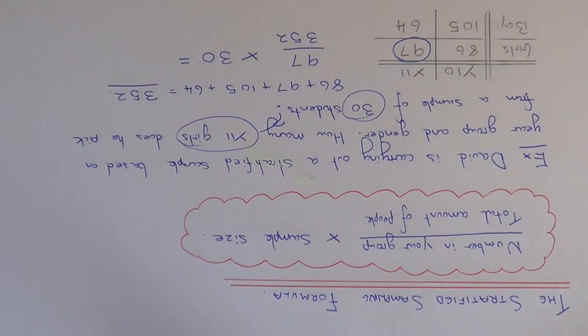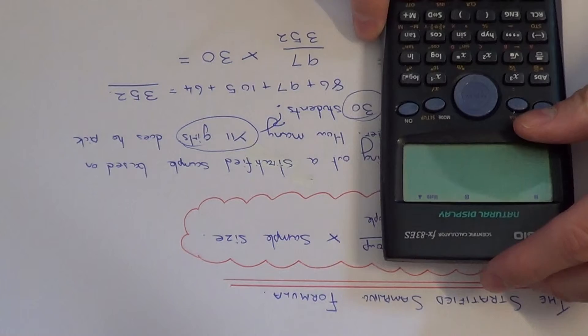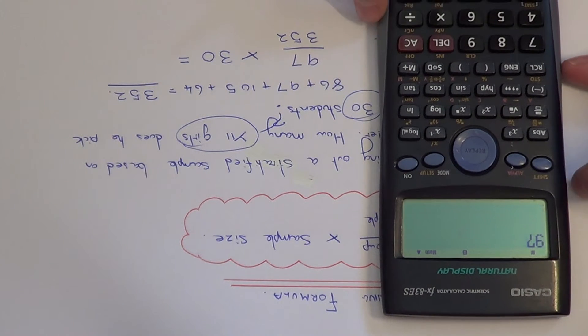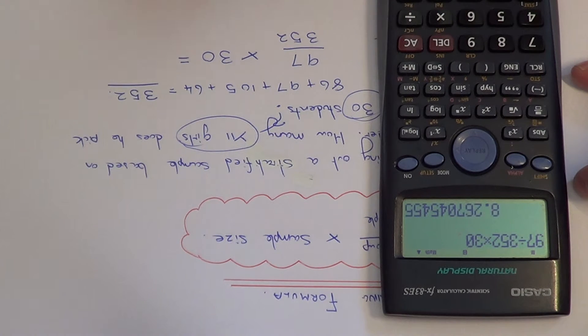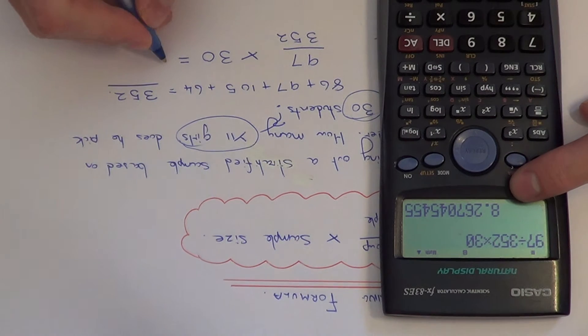So if you type this in on your calculator, we have 97 divided by 352 times 30. So just write this figure down.